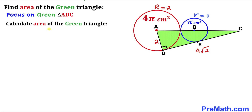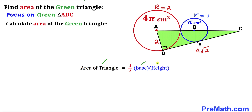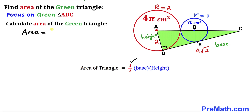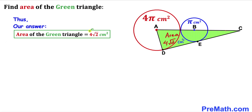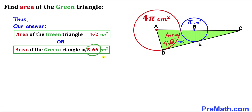For our final step, let's calculate the area of green triangle ADC using the formula: area = ½ × base × height. Our base is 4√2 and our height is 2. So the area equals ½ × 4√2 × 2 = 4√2 cm². Thus the area of this green triangle is 4√2 centimeters squared, which is approximately 5.66 cm².